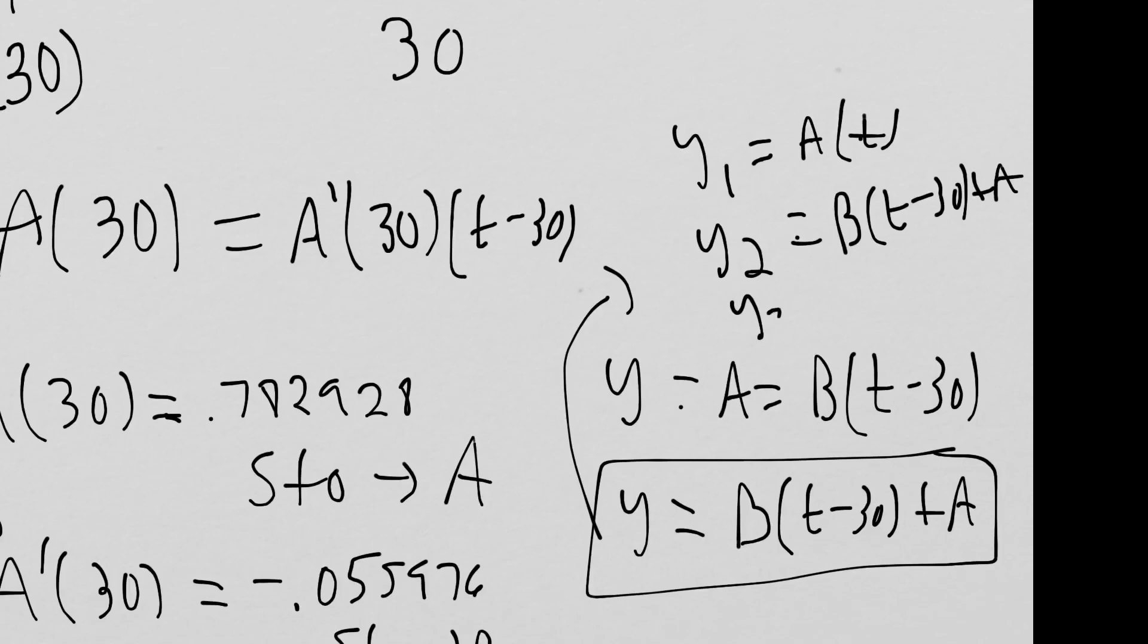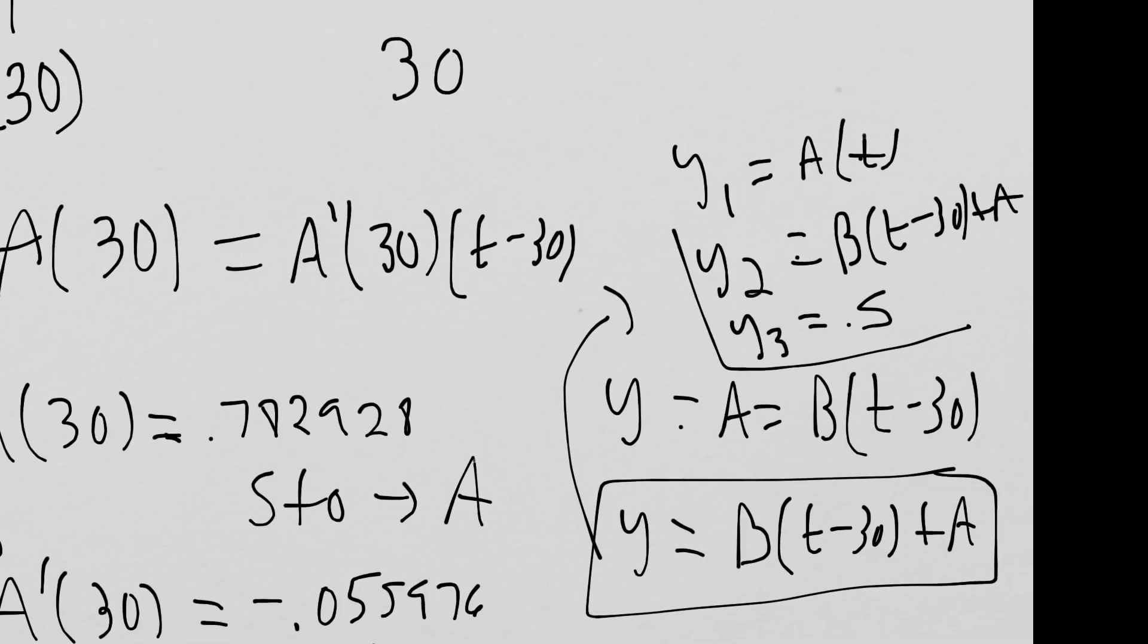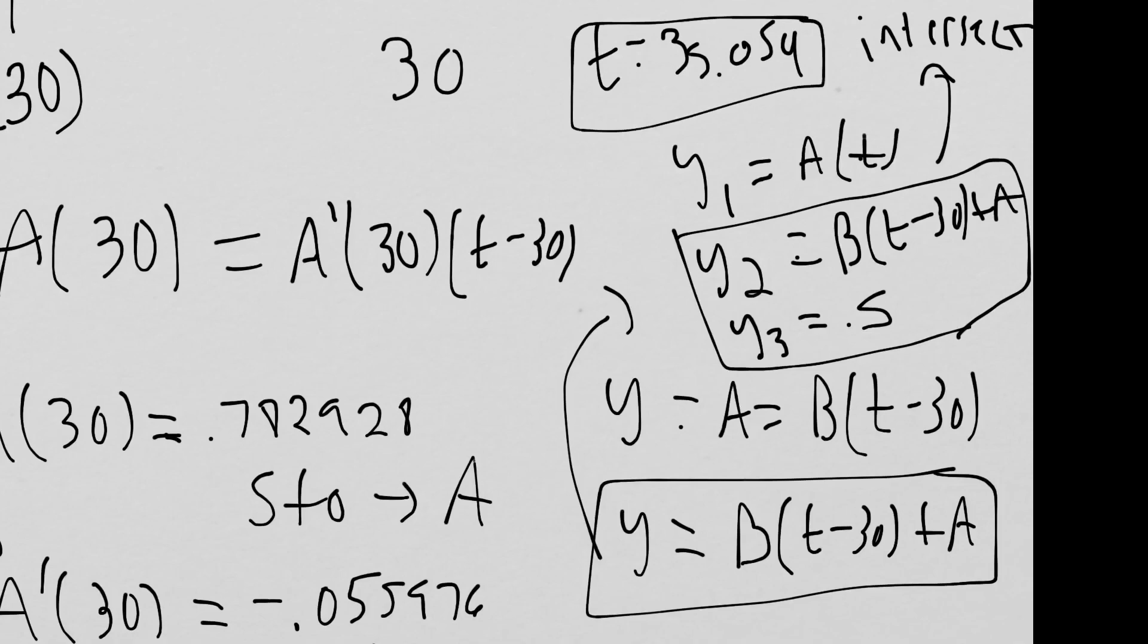Then we're going to graph, and we're going to find out where they intersect. That's going to end up happening at t equals 35.054. Alright, that's it.